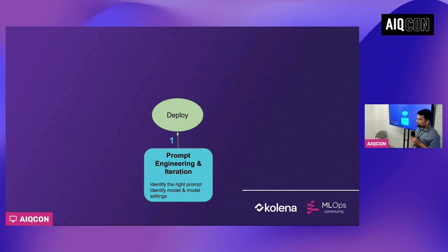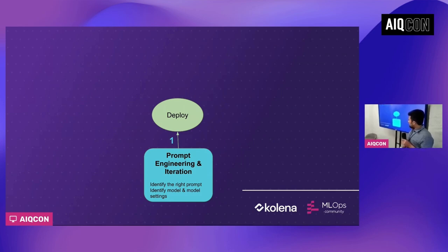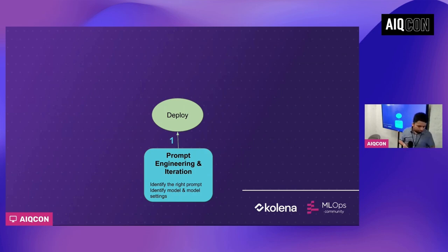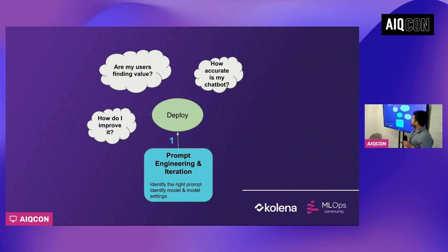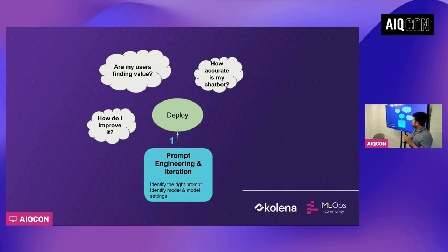Typically, when an enterprise starts up, they essentially do some prompt engineering. They identify the right prompt, right model, right hyperparameter settings for the model. They identify a use case, they deploy it to production, and you have a nice and shiny little demo that goes viral on Twitter and LinkedIn. And then you have no idea whether your users are finding value out of it, whether it's accurate. Let's say you are building a customer support agent chatbot — you have no clue how to improve it and no idea what the accuracy looks like. You probably did some eyeballing and vibe-checking before you deployed it to production, but then your customers are not interacting with it.